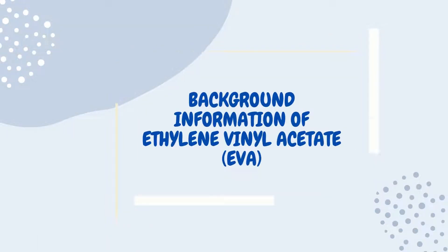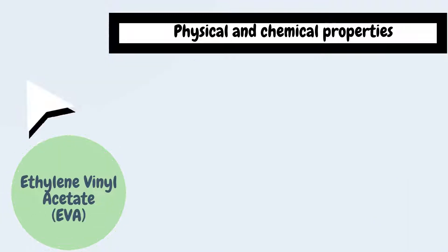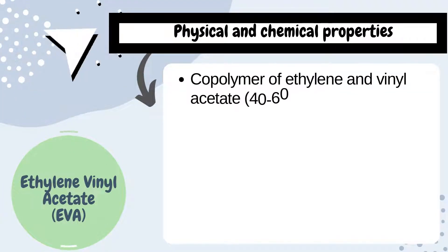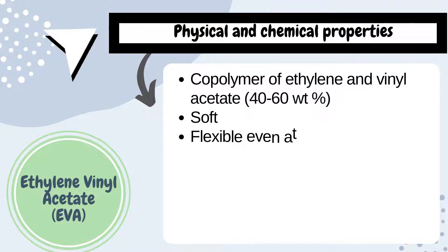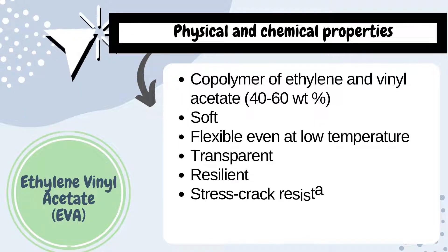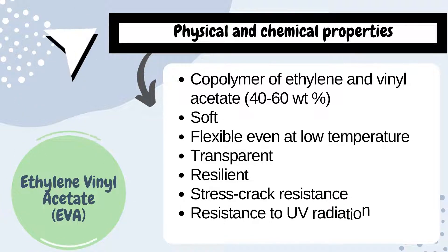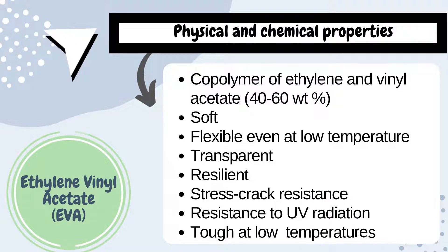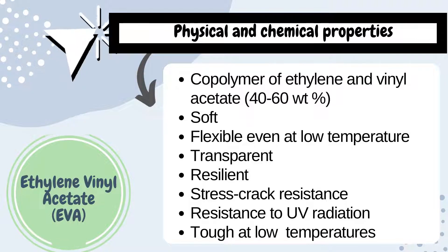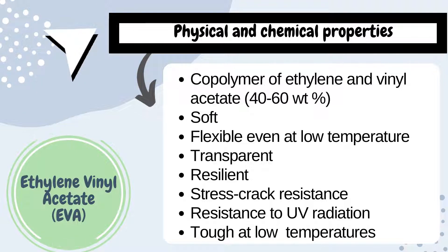Let's start with the background information of ethylene vinyl acetate. EVA is a copolymer of ethylene and vinyl acetate. It contains 40 to 60 weight percentage of vinyl acetate. EVA is classified as a soft polymer and flexible even at low temperatures. Besides, it is transparent and resilient. It also has good resistance against stress cracking and UV radiation.